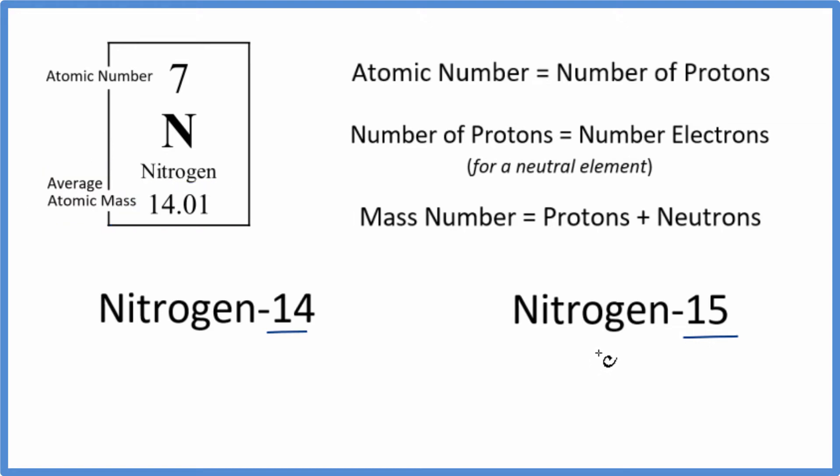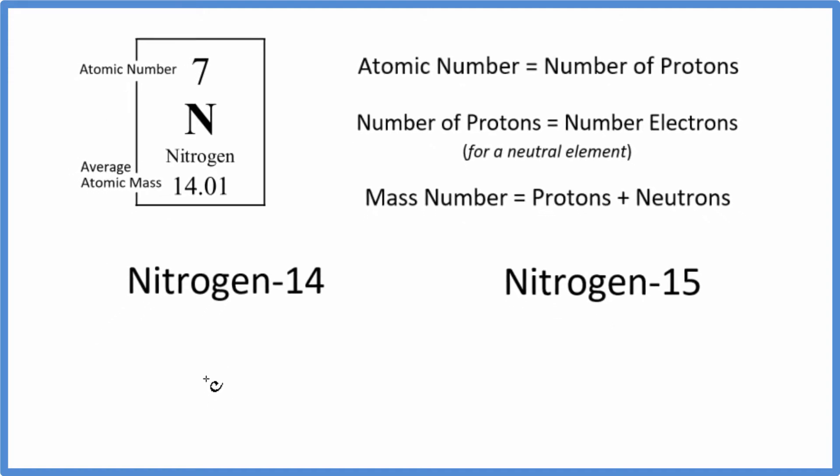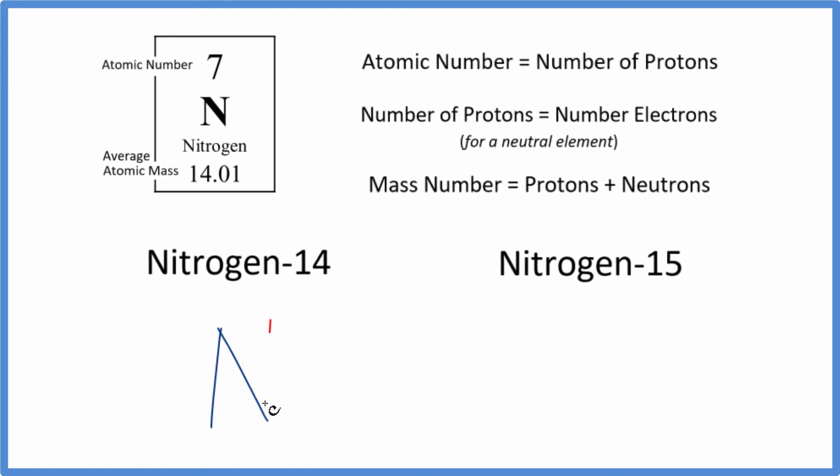To write the isotopic notation or the nuclear notation, we first write the element symbol. That's N for nitrogen. And then we have the mass number here and the atomic number here. So we know the mass number. That's the 14 for this isotope of nitrogen. Let's put that in.